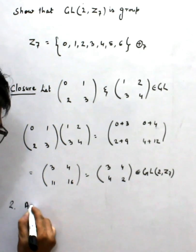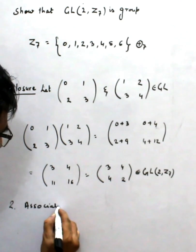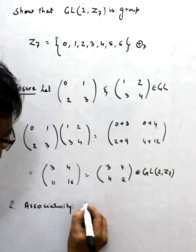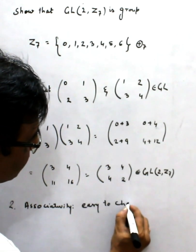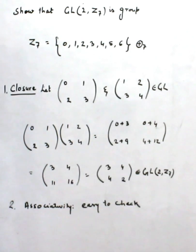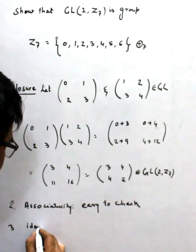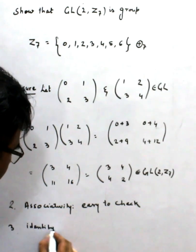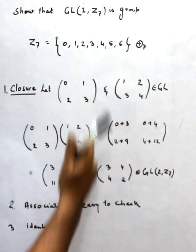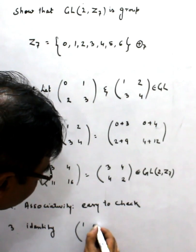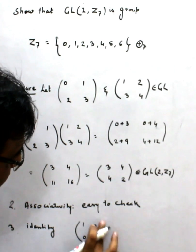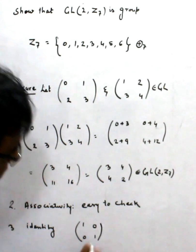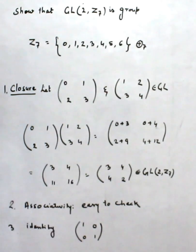Number 2: associativity. Associativity is easy to check — we just take 3 elements from GL₂(Z₇) and verify the associativity. Number 3: identity. What is the identity in GL₂(Z₇)? Obviously, the multiplicative identity is the 2×2 identity matrix, and this element satisfies the domain.